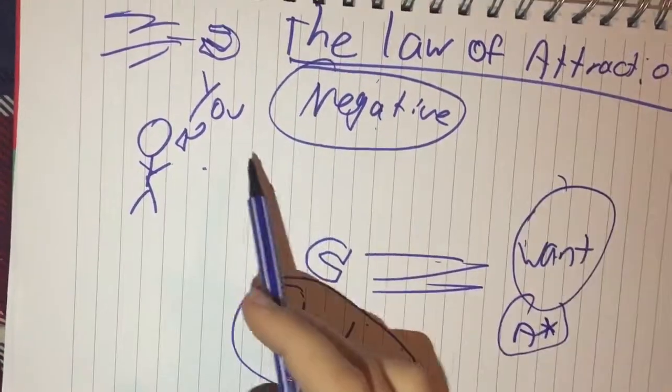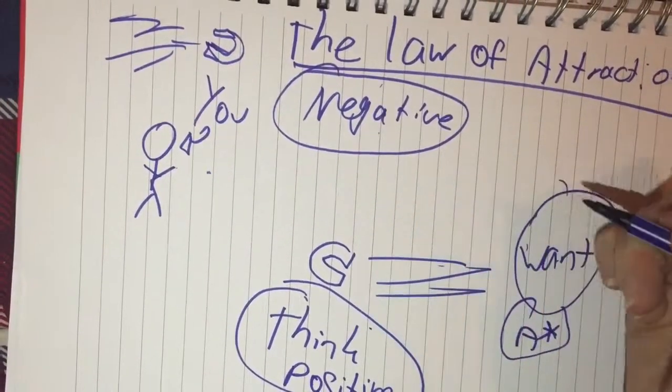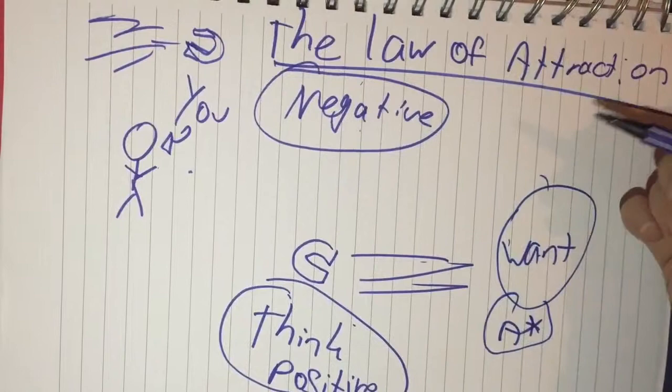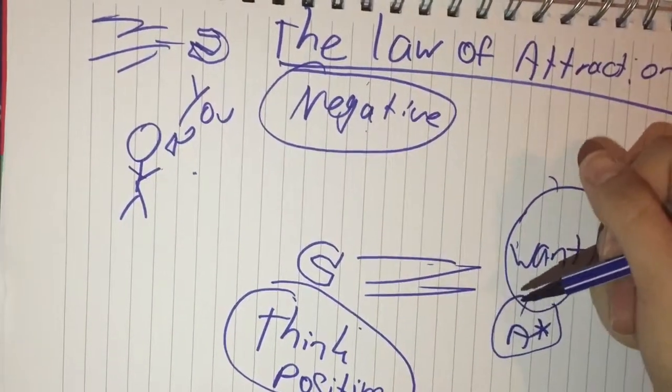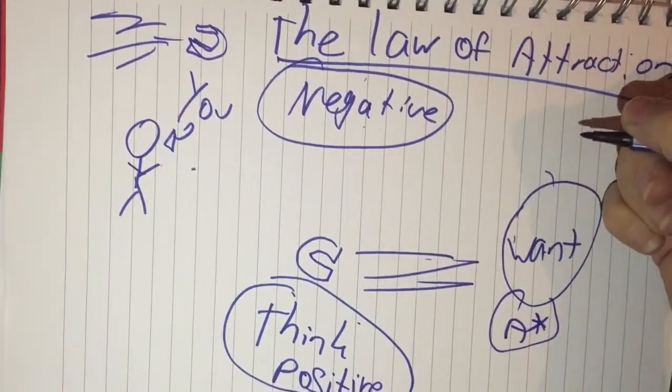However, if you think negative and you don't believe that you could get an A-star, you automatically don't put the work in it. If you don't do the work and you think you cannot achieve this goal anyway, then you won't, because you weren't working and you're not believing in yourself.